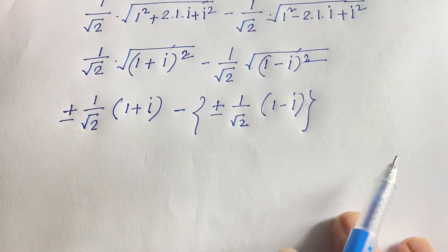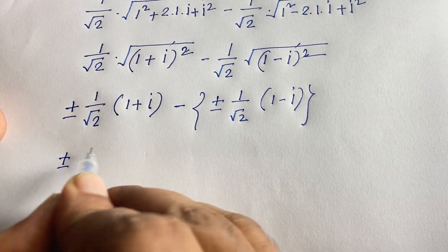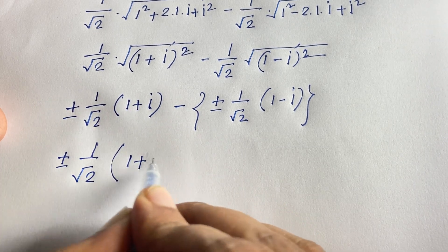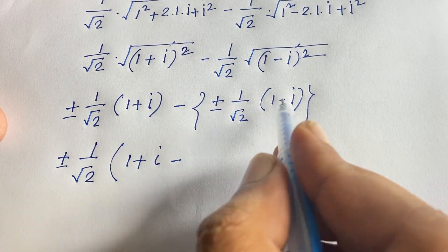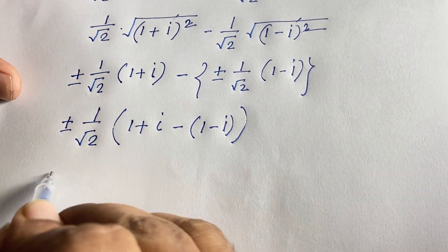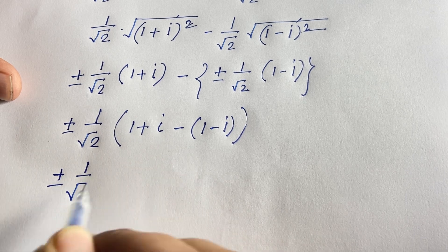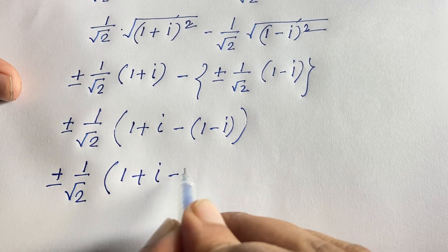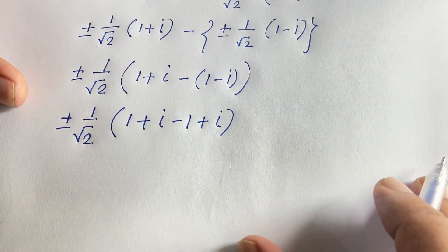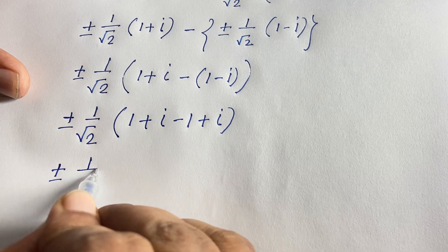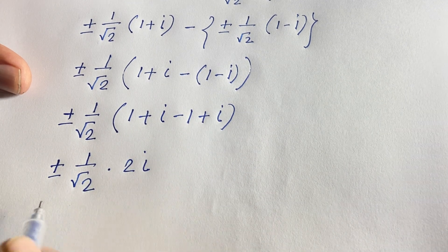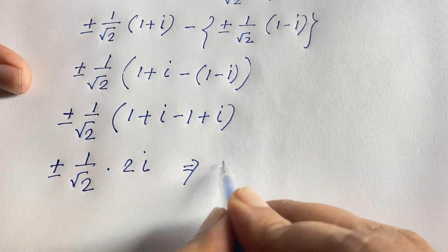Now I subtract the second from the first. The factor ±(1/√2) is common. So we compute (1 + i) − (1 − i). This gives 1 + i − 1 + i = 2i. The 1s cancel and we are left with 2i.